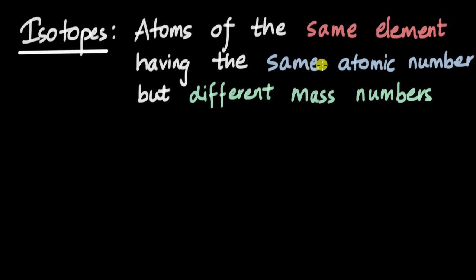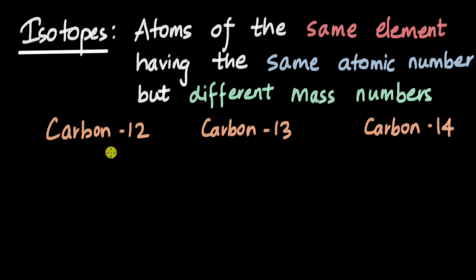We already know that atoms of the same element having the same atomic number can have different mass numbers, and such atoms are called isotopes. We have seen examples of these isotopes. There's carbon-12, 13, and 14. In each of these cases they have the same atomic number, that is 6, but their mass numbers are different: 12 for C-12, 13 for C-13, and 14 for the last one.